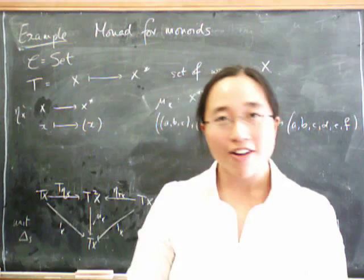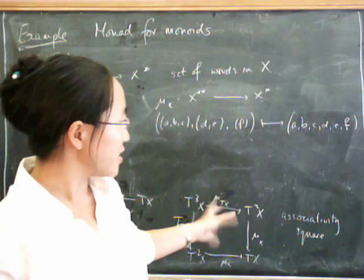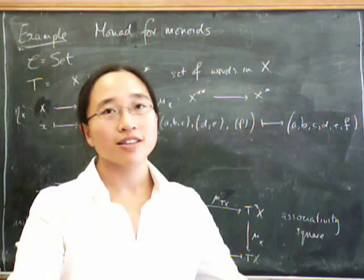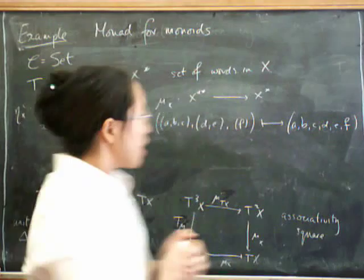This time we're going to look at some more examples of monads. In fact, we're going to carry on with the example we had before of the monad for monoids and actually look at why it satisfies these axioms. After that, we'll have a look at another example, which is the monad for categories, technically small categories, because that's very closely related to this one and there's another key example.